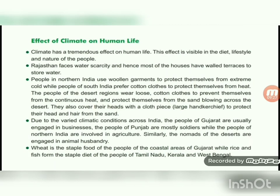Climate has a tremendous effect on human life, visible in the diet, lifestyle, and nature of people. Rajasthan faces water scarcity, and hence most houses have walled terraces to store water. People in northern India use woollen garments to protect themselves from extreme cold, while people in south India prefer cotton clothes. The people of the desert region wear loose cotton clothes to prevent themselves from continuous heat and protect themselves from sand blowing across the desert.